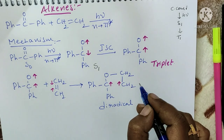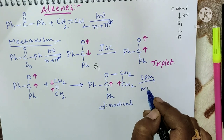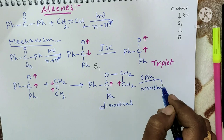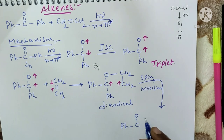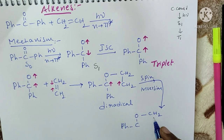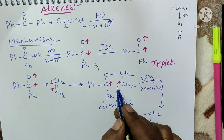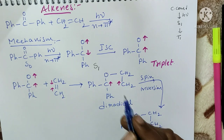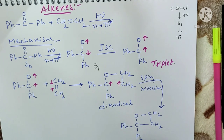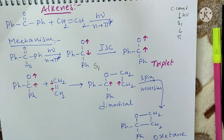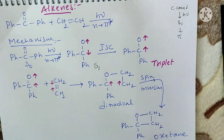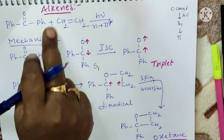Upon spin inversion, one of the electrons reverses so that opposite spins are formed and a bond is formed, giving Ph-C(-O-CH₂-CH₂)-Ph. This is known as oxetane — a cyclobutane ring containing oxygen — and that is our end product.